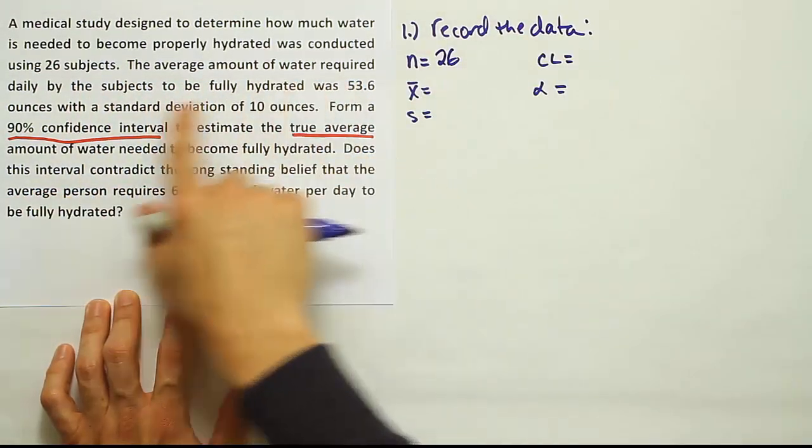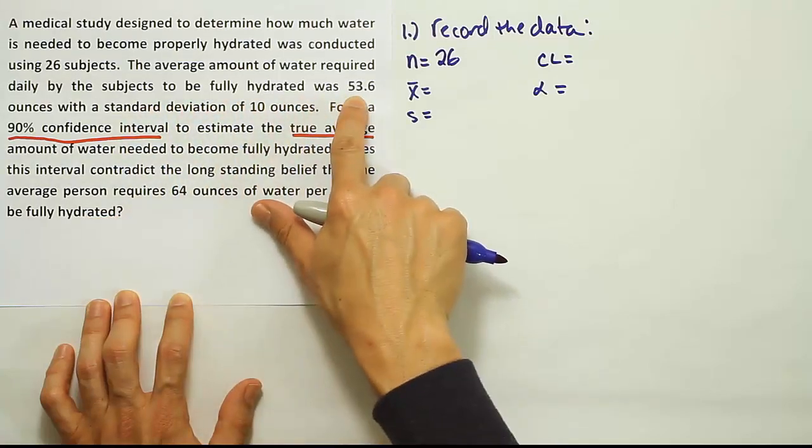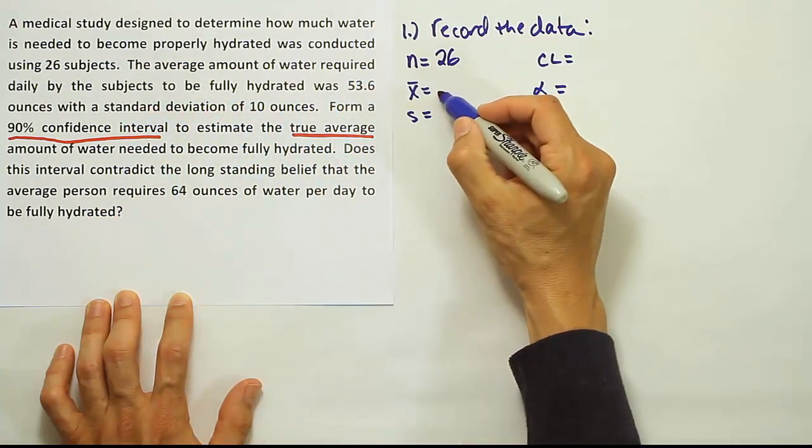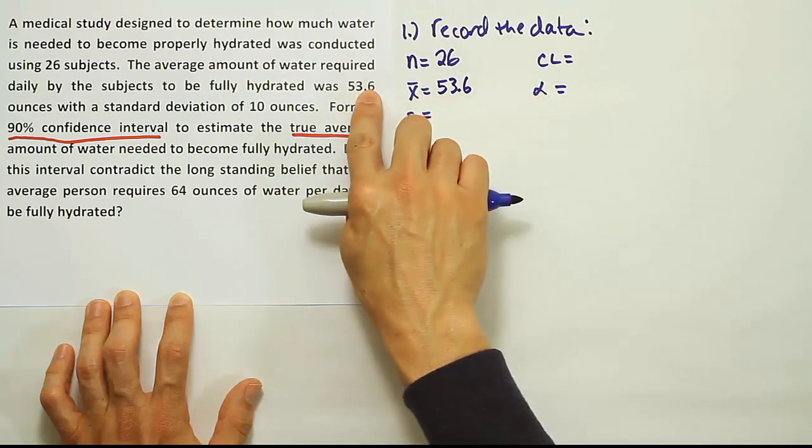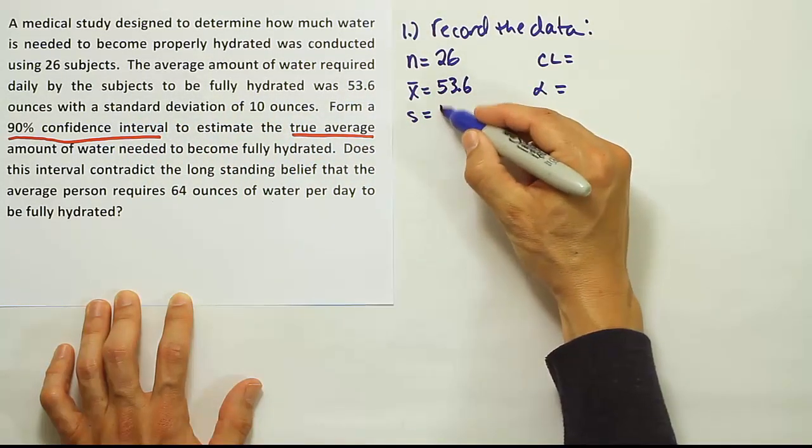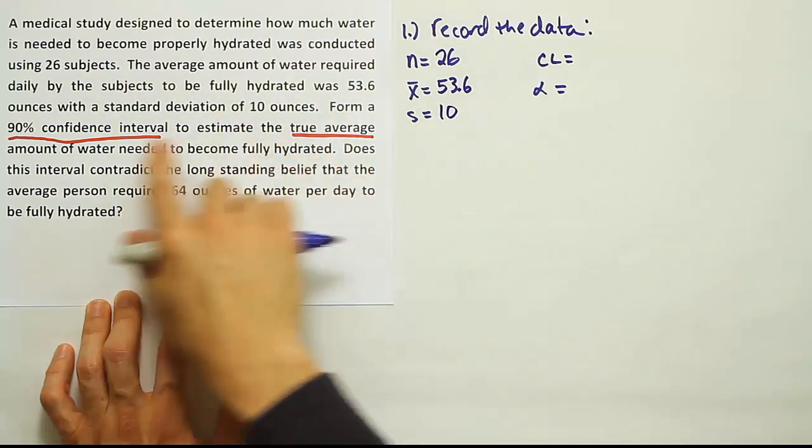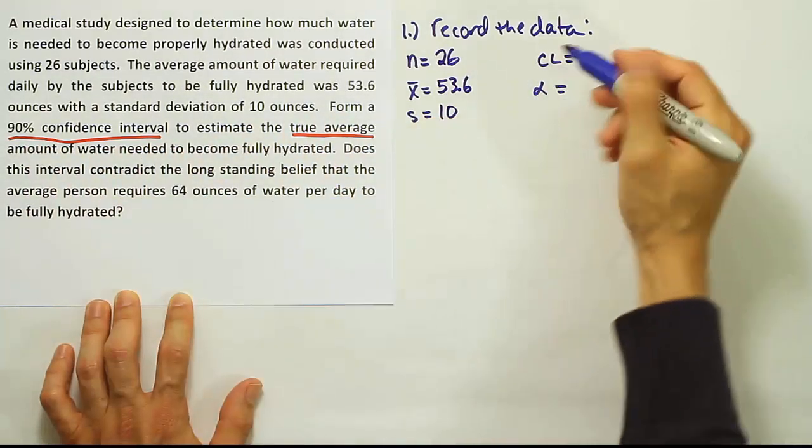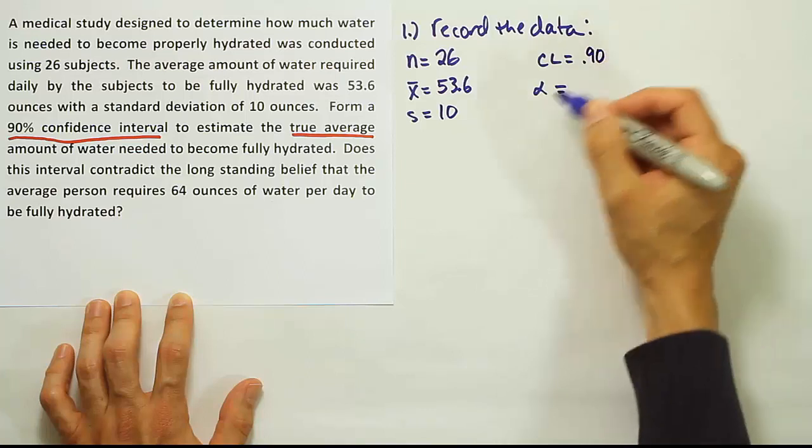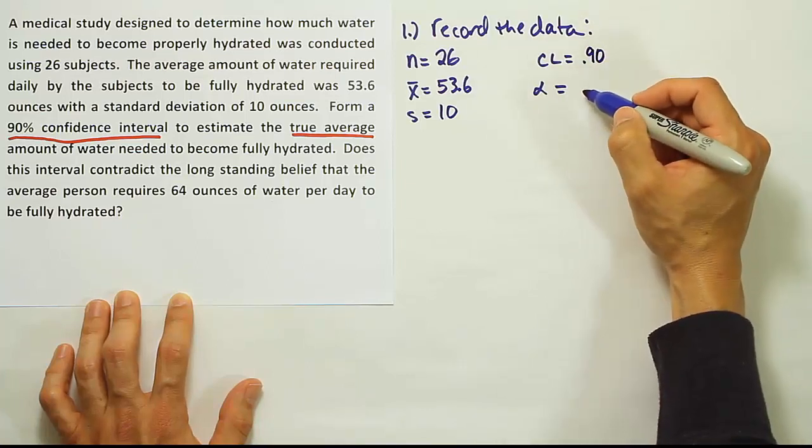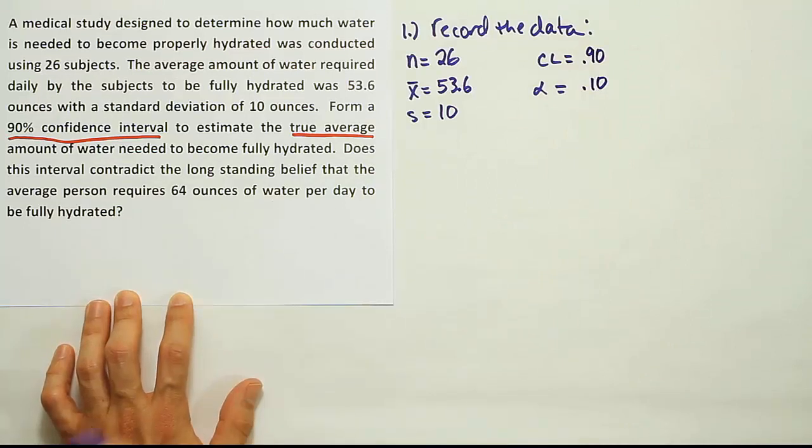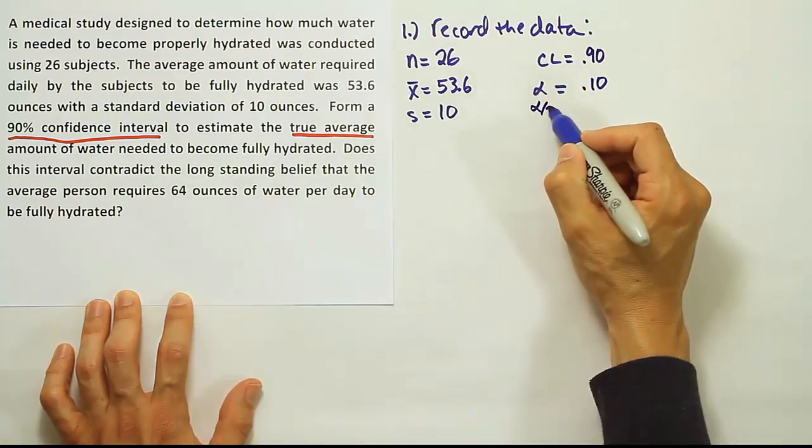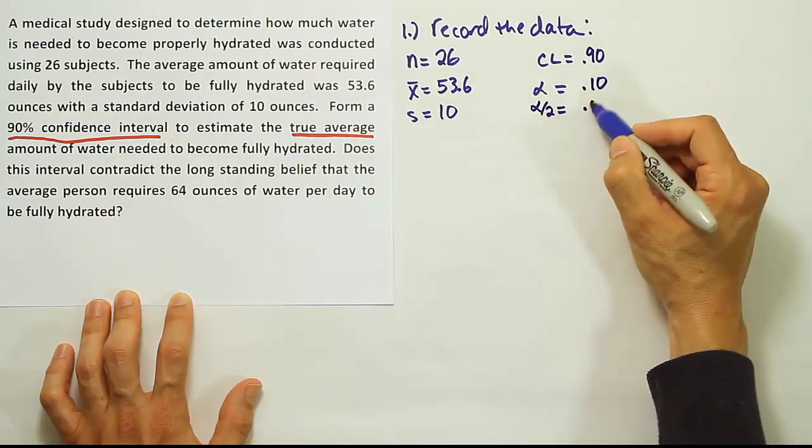It says the average amount of water required daily by the subjects to be fully hydrated was 53.6 ounces. 53.6 is our x̄ then, the sample mean for the 26 people, with a standard deviation of 10 ounces, so s is 10. It says form a 90% confidence interval, so we know the confidence level is 0.90. α is the complement of that, so 0.10. And then finally, α divided by 2, which we always need, is 0.05.